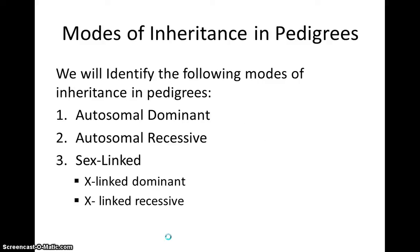As a reminder, the modes of inheritance that we saw in pedigrees were autosomal dominant, autosomal recessive, and two sex-linked modes: X-linked dominant and X-linked recessive. There are other modes of inheritance, such as codominant and incomplete dominance, but you are not expected to look at a pedigree and identify these.